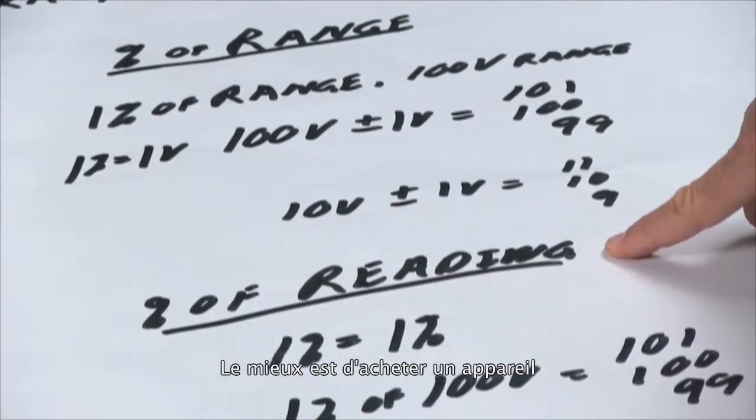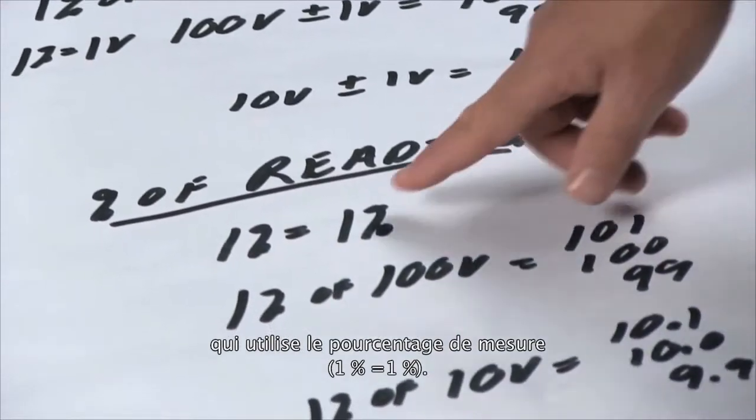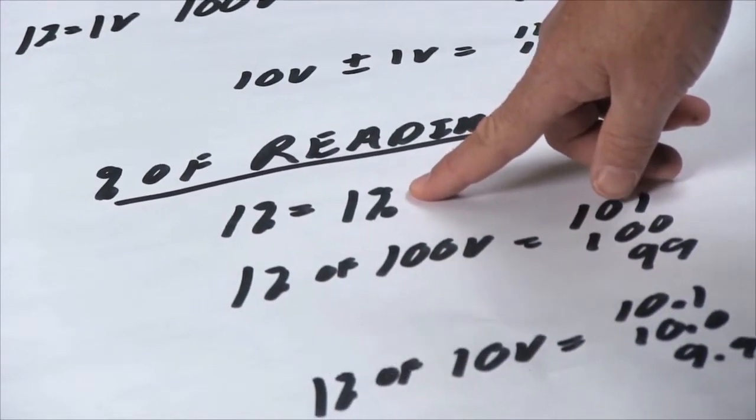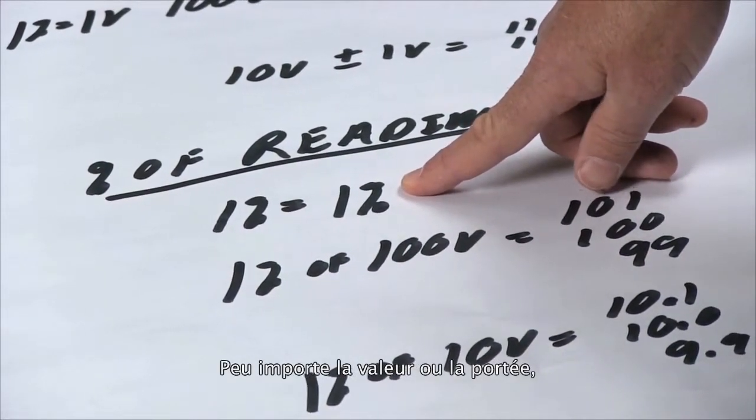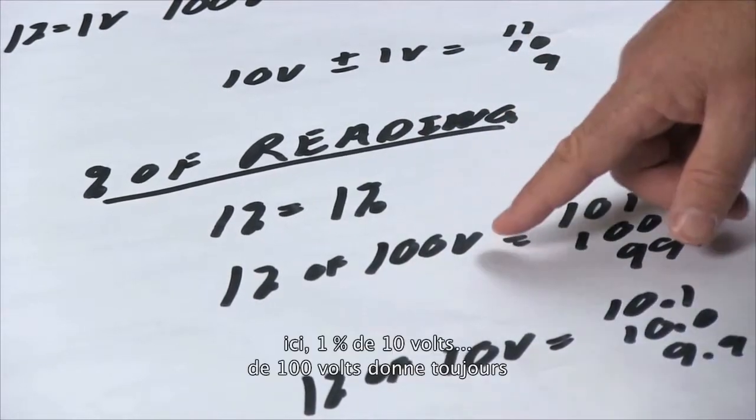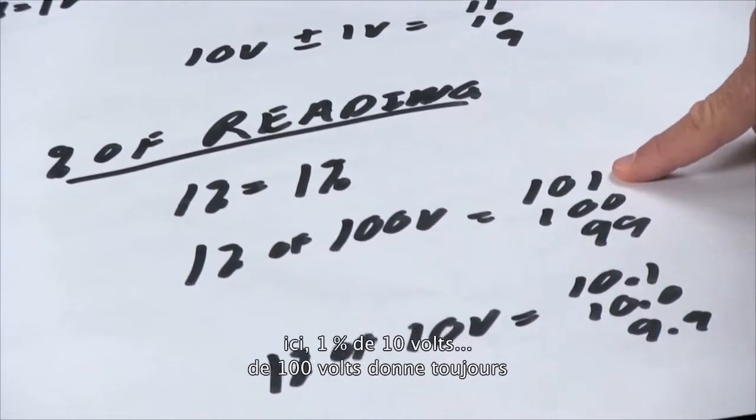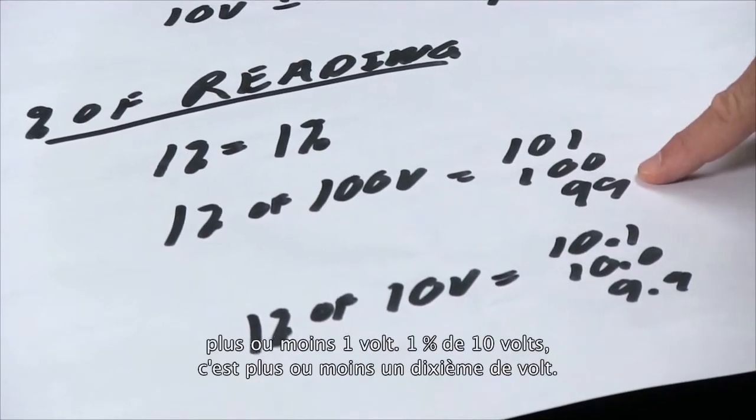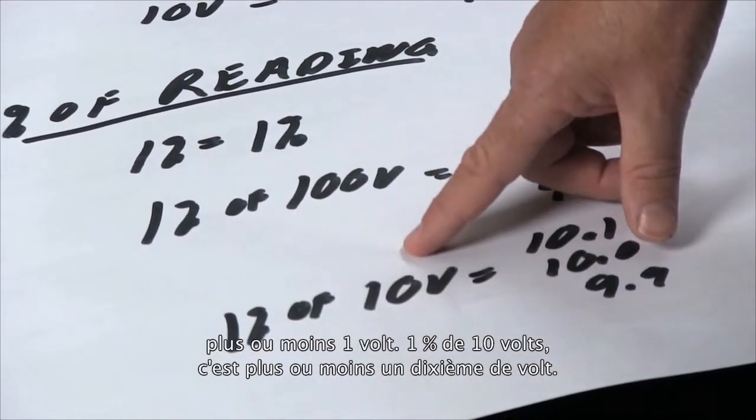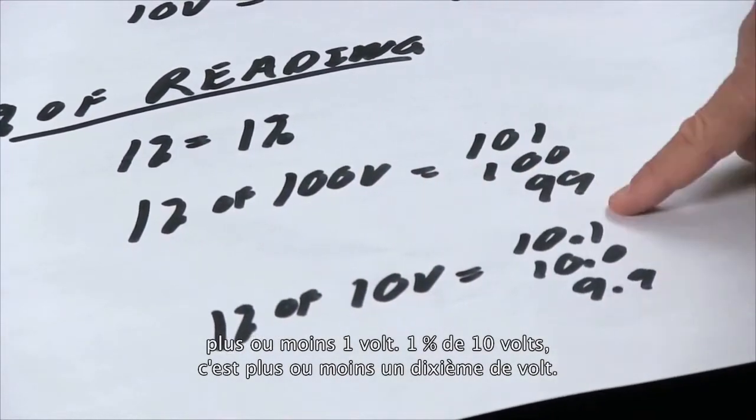A better way is to buy an instrument that has percent of reading, and then one percent is one percent. It doesn't matter what value or what range you're on. So here, one percent of a hundred volts is still that plus or minus one volt. One percent of ten volts is plus or minus a tenth of a volt.